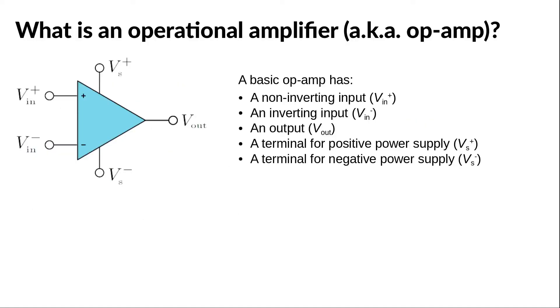A basic op-amp has a so-called non-inverting input, V in plus, which is indicated on the circuit symbol by a plus sign, an inverting input, V in minus, indicated by a minus sign, an output, V out, and two terminals for the power supply, V s plus and V s minus.